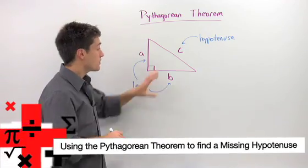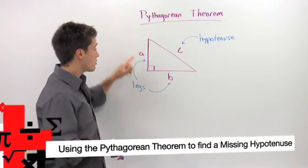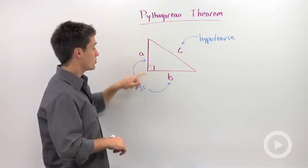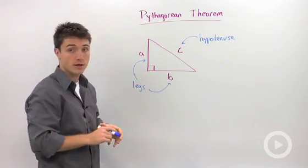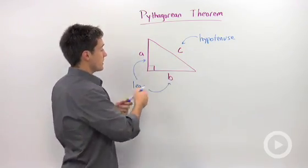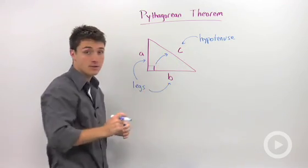The Pythagorean Theorem says that if you have a right triangle where you know your two legs and a hypotenuse, where the legs are the sides adjacent to your right angle, and the hypotenuse is the side that is opposite the right angle.